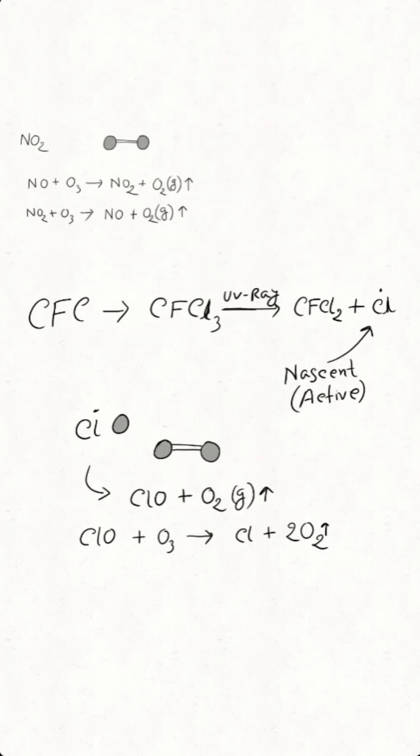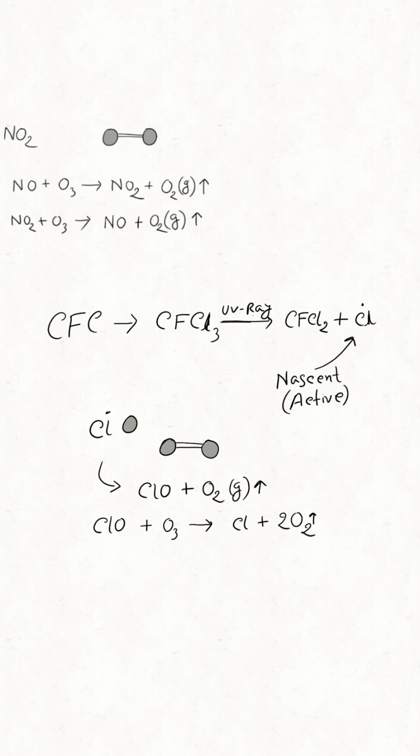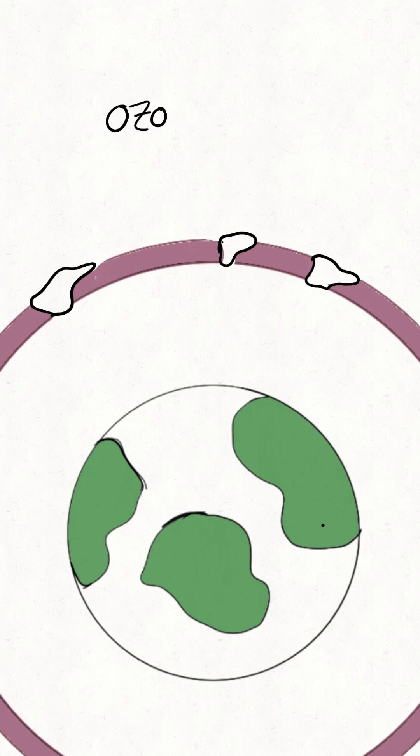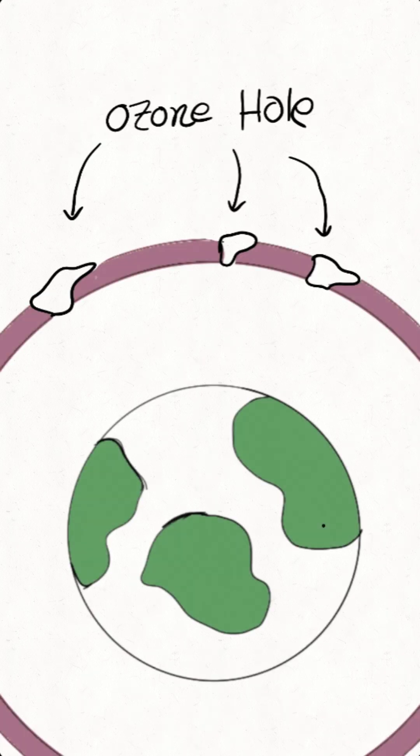By this continuous process, the density of ozone layer decreases and it produces ozone holes, which are very harmful for our atmosphere and the living beings in the world.